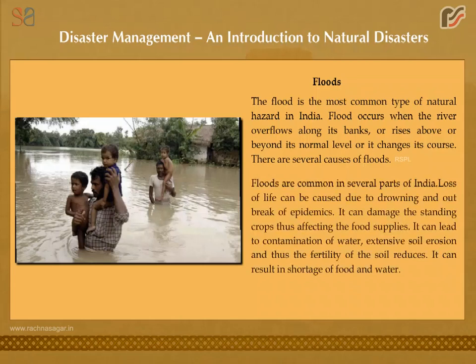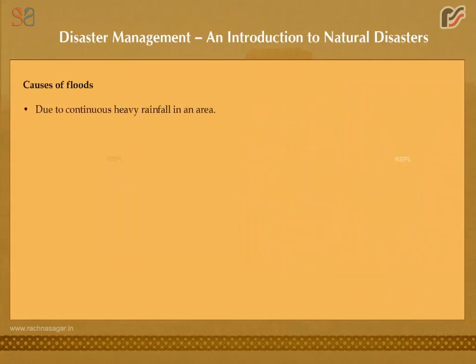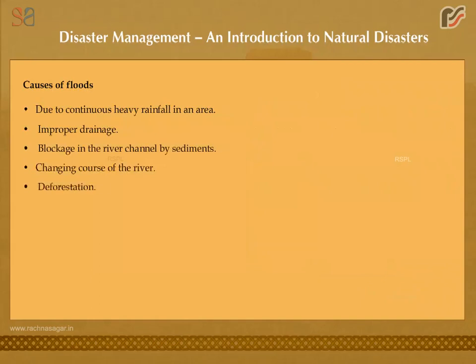Loss of life can be caused due to drowning and outbreak of epidemics. Floods can damage standing crops, affecting food supplies, and lead to contamination of water, extensive soil erosion, and reduced soil fertility. Floods can result in shortage of food and water. Causes include continuous heavy rainfall, improper drainage, blockage in river channels by sediments, changing course of rivers, deforestation, excessive sedimentation of the riverbed, and collapse of dams.